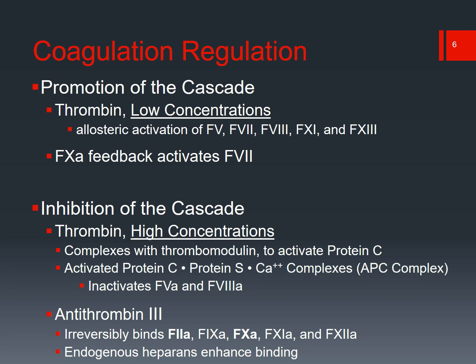When we talk about inhibition of the cascade, thrombin again plays a part, but in opposition. In high concentrations, thrombin will bind to thrombomodulin. Thrombomodulin activates protein C in the presence of protein S and calcium to form the activated protein C complex, commonly referred to as the APC complex. That APC complex then binds to factors 5a and 8a, rendering those sections of the cascade inactive.